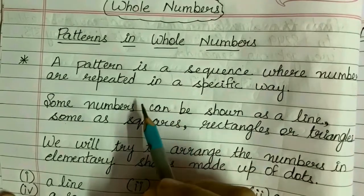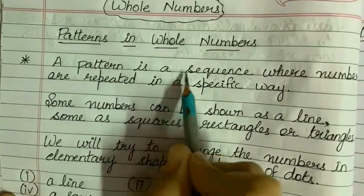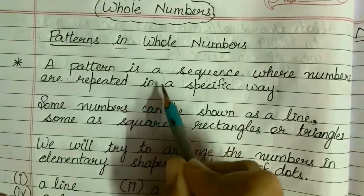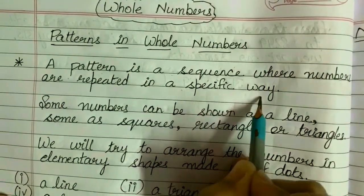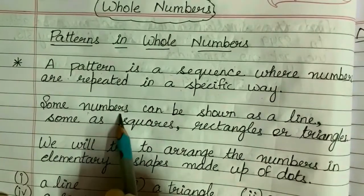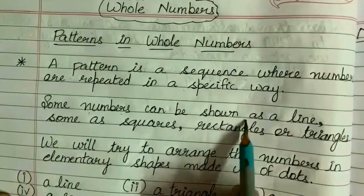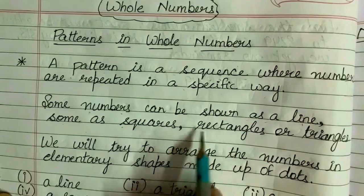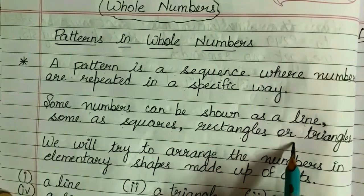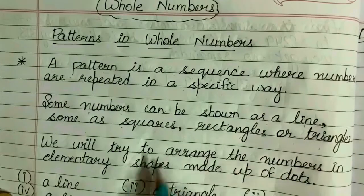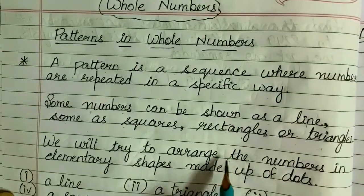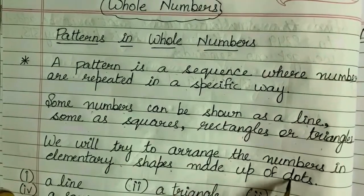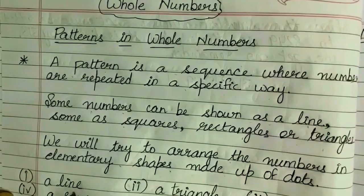So first of all, what is a pattern? A pattern is a sequence where numbers are repeated in a specific way. Some numbers can be shown as a line, some as squares, rectangles or triangles. We will try to arrange the numbers in elementary shapes made up of dots.